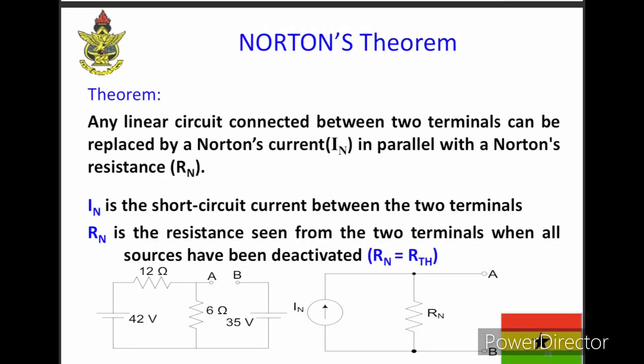So Norton's theorem states that a linear circuit connected between two terminals can be replaced by a Norton's current in parallel with a Norton's resistance. The Norton's current is the short-circuit current between the two terminals and the Norton's resistance is the resistance seen from the two terminals when all sources have been deactivated.